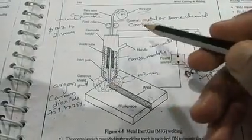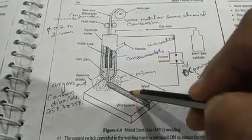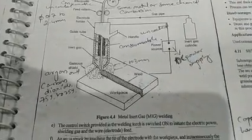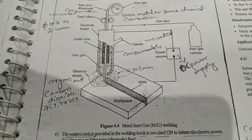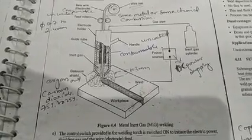It is used of the same material or the same chemical composition of which the material is to be joined. So this is the simple working procedure of the metal inert gas welding process.